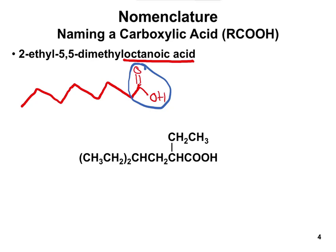Now that we have those eight carbons, we number them — number one through eight, with carbon one at the carboxylic acid end. So now we can add our substituents: an ethyl group on carbon two (a CH₂ bonded to a CH₃), and then 5,5-dimethyl — that's a methyl going one way and another methyl going the other way on carbon five — two separate CH₃ groups.